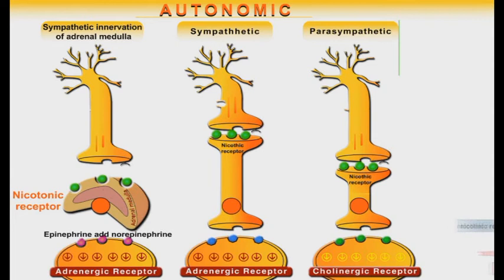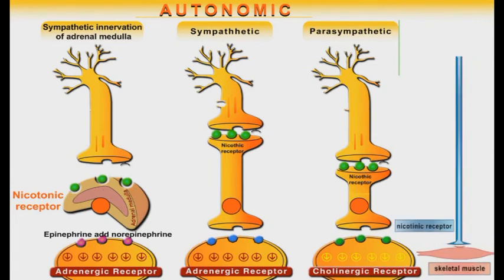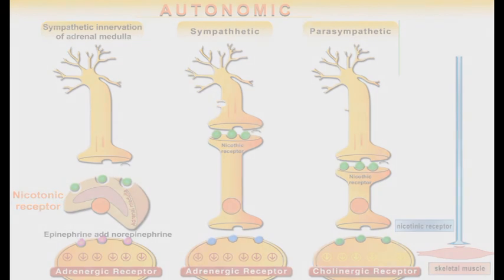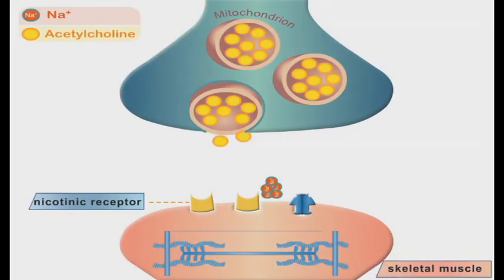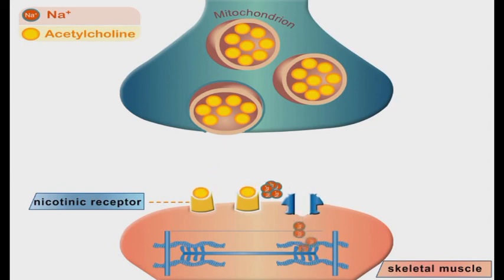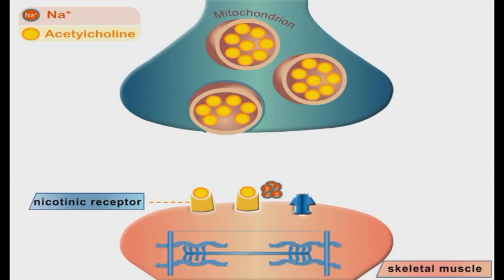The other main division of the peripheral nervous system is the somatic nervous system, which controls the skeletal muscles. The main characteristic of somatic innervation is the lack of ganglions. The nerves originate from the central nervous system and end directly in the neuromuscular junctions. The action potentials of the neurons stimulate the release of acetylcholine molecules, which bind to their nicotinic receptors in the muscles to induce muscle contraction.